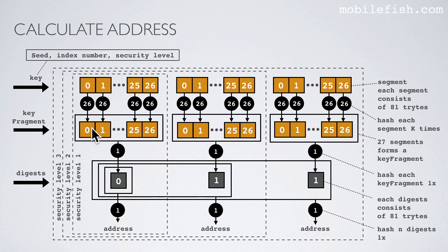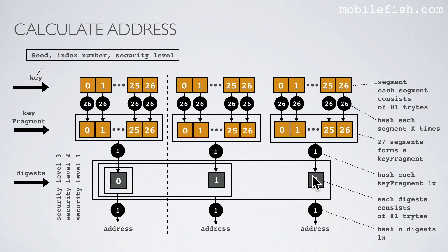Each segment is hashed 26 times. 27 segments together form a key fragment. Each key fragment is hashed 1 time to create the digest. Depending on the selected security level, 1, 2 or 3 digests are combined together.